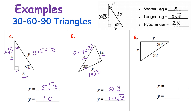Let's look at this last example. I have my hypotenuse of 32 opposite the right angle, and my shorter leg is opposite the 30 degree angle, making the remaining angle 60 degrees, so y is my longer leg. The hypotenuse is always twice the shorter leg, meaning the shorter leg is half the hypotenuse. Half of 32 is 16, so the shorter leg is 16. The longer leg is the square root of three times 16, giving 16 times the square root of three. So x equals 16 and y equals 16 times the square root of three.